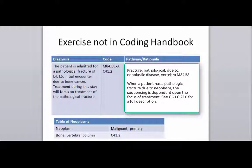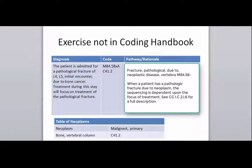Here's another exercise not in the coding handbook that is very common in hospitals: a patient admitted for a pathological fracture of L4-5, initial encounter, due to bone cancer. Treatment during this stay will focus on the treatment of the pathological fracture. That documentation is important because our coding guidelines say the sequencing is dependent on the focus of treatment when you have a pathological fracture due to a neoplasm. The pathway: main term is 'fracture, pathological,' with subterms 'due to neoplastic disease, vertebrae,' taking you to M84.58. A seventh character is needed; the initial encounter is our seventh character, requiring a placeholder X in the sixth character position. That code is the principal because the focus of treatment is the pathological fracture.